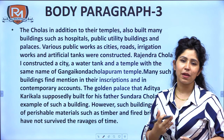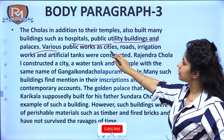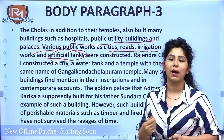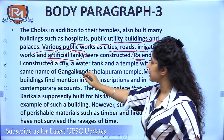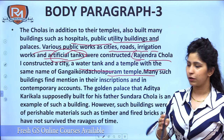In addition to temples, sculptures, paintings, and idols, the Cholas also constructed many public facilities. They built hospitals, public utility buildings, palaces, and new cities. Various public works like roads, irrigation works, and artificial tanks were of great importance — southern rivers not being perennial made water harvesting techniques essential. Rajendra Chola I constructed a city, a water tank, and a temple all with the same name: Gangaikonda Cholapuram. Many such buildings are mentioned in their inscriptions and contemporary accounts.